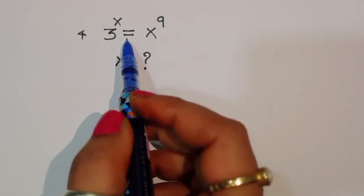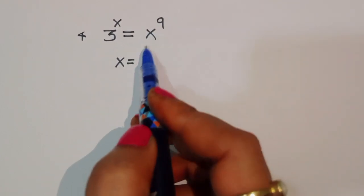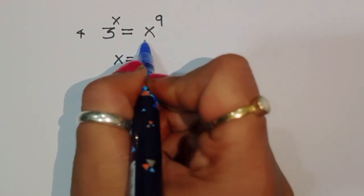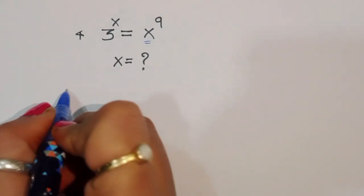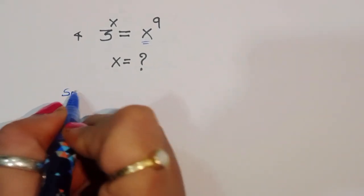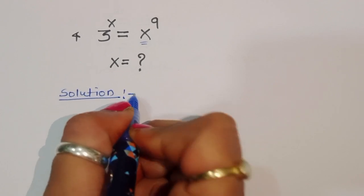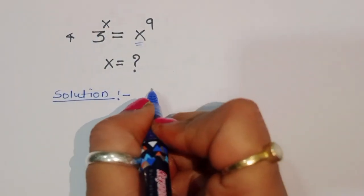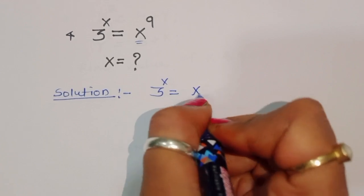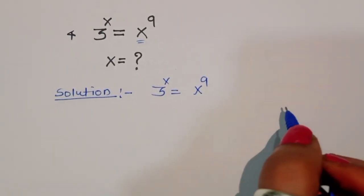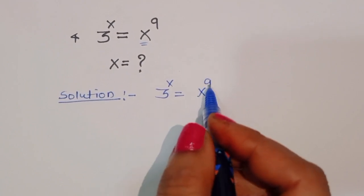We are given 3 power x is equal to x power 9, and we have to find out the value of x. What is the value of x in this equation? Let's see the solution. We have 3 power x is equal to x power 9.